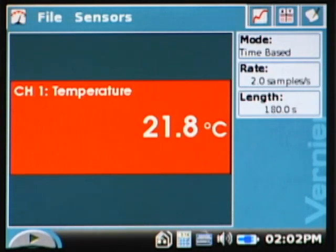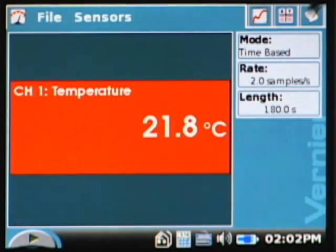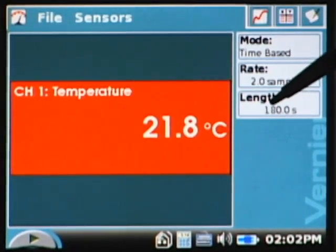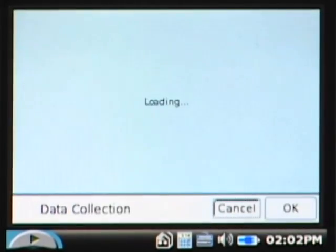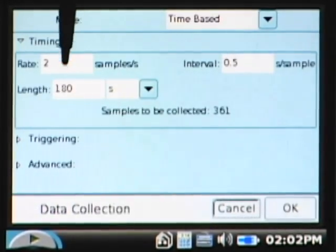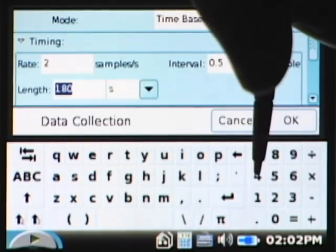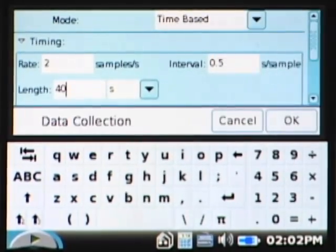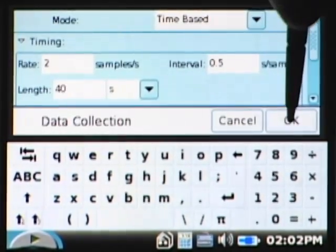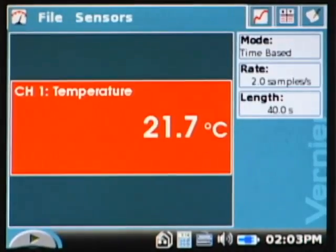In the lab, it doesn't want us to use that long of time, so we need to change that to 40 seconds. It's very easy to do - I just come down and tap on length, and I can go here and change my experiment length. Instead of 180, I want 40 seconds. I say okay, and now my experimental length is 40 seconds.